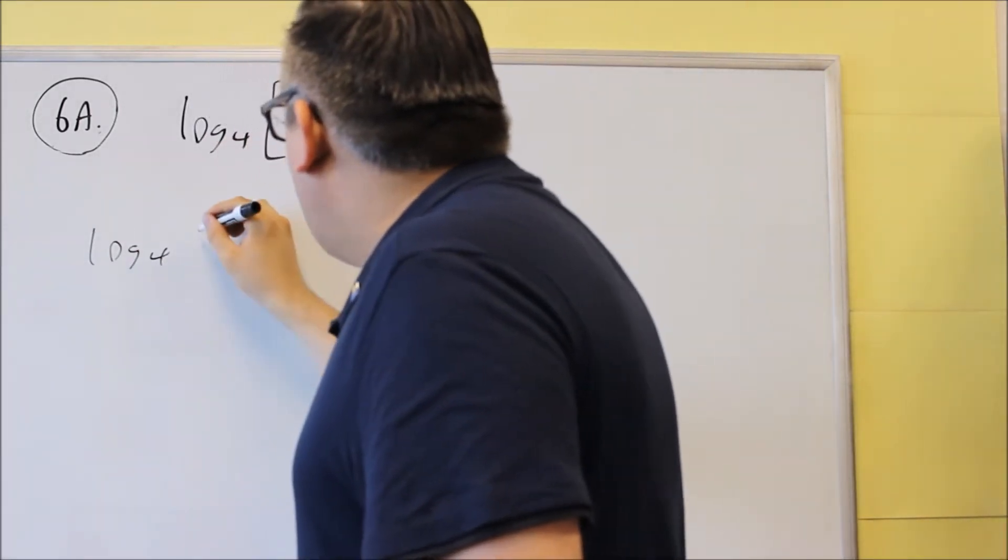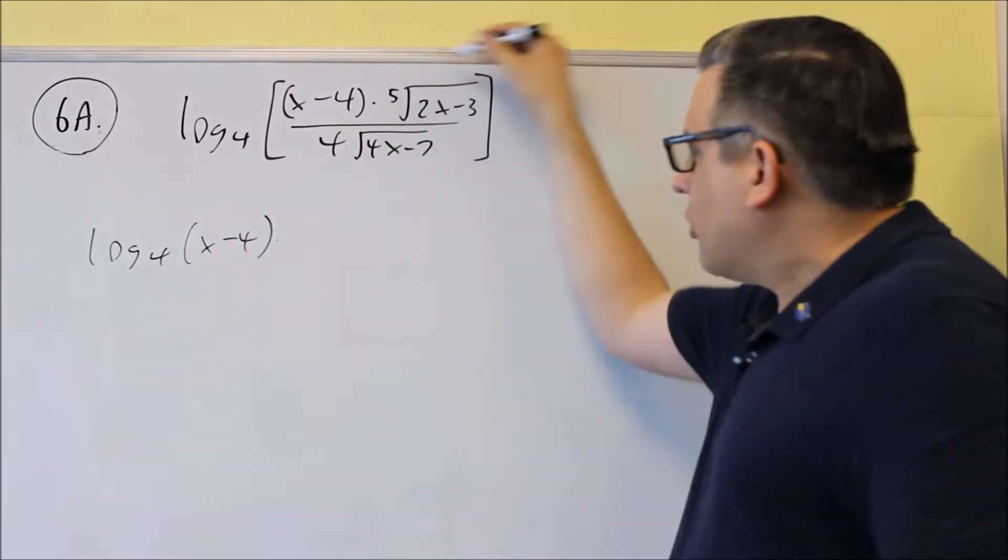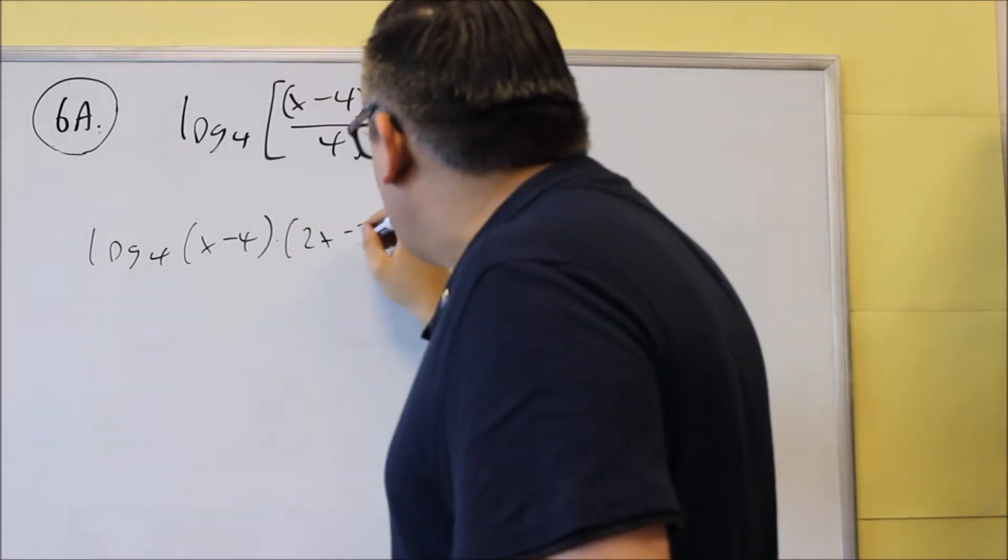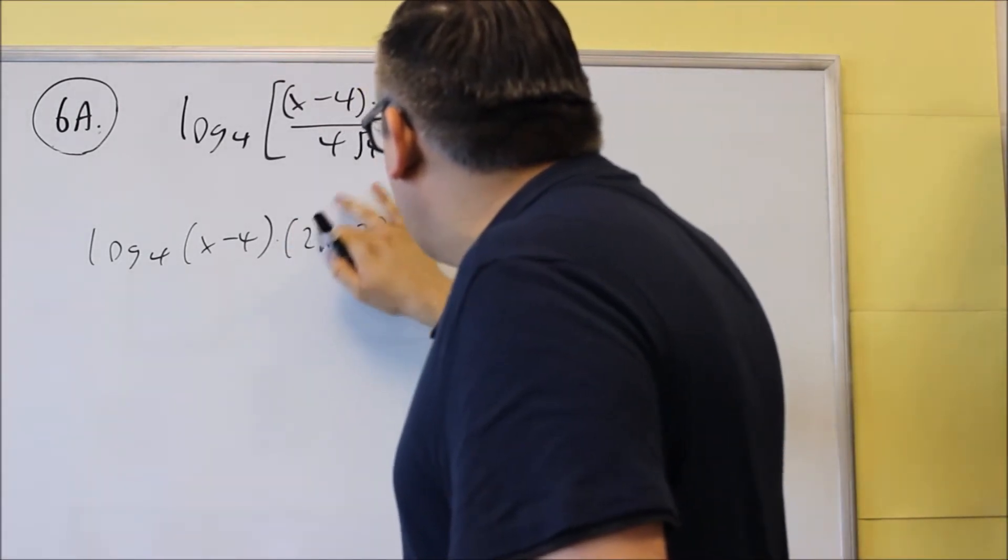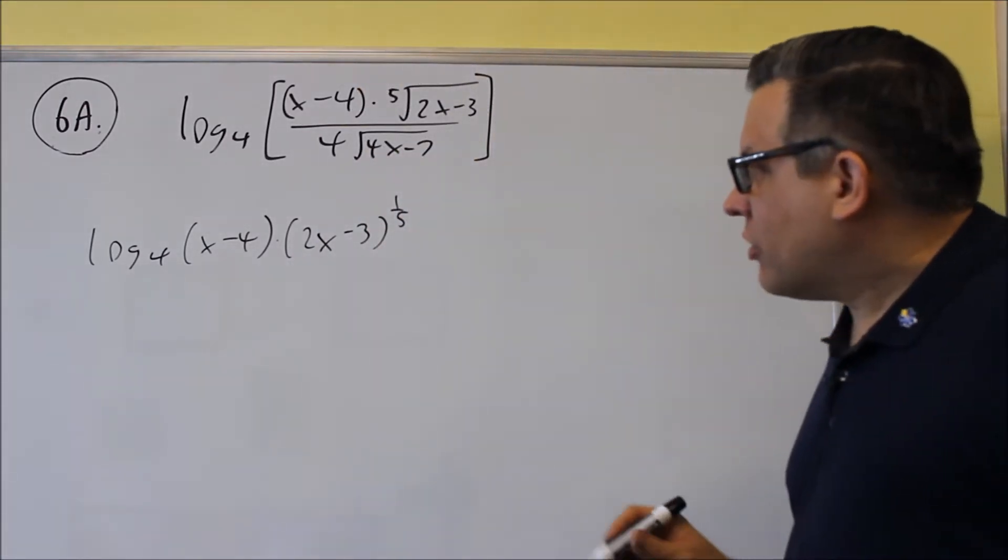So here's the first step. We're going to start out with log 4, I'm going to do x minus 4 and then I'm still going to leave this part there except I'm going to rewrite it as 2x minus 3 to the 1 fifth because that way we can bring that power down later.